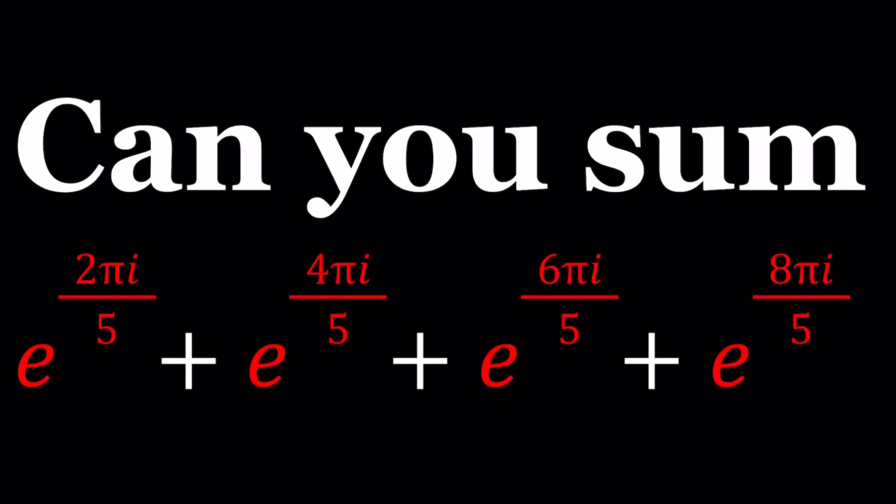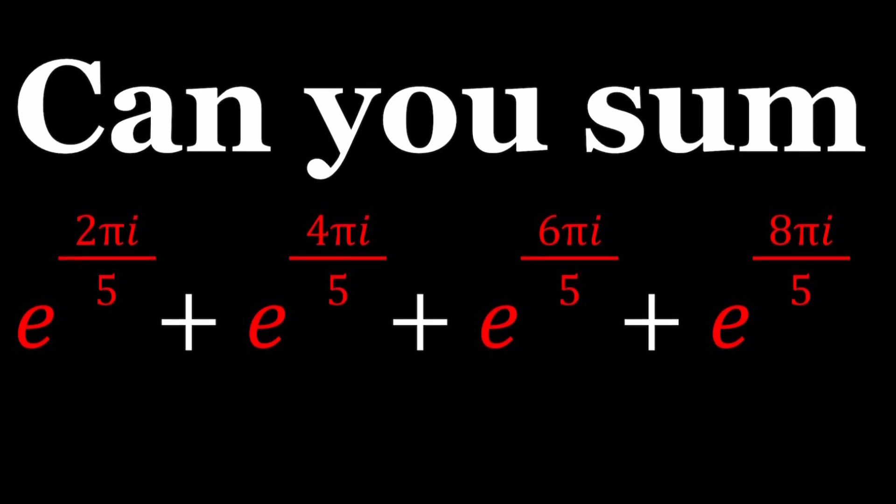Hello everyone, welcome to A plus B I. This channel is all about complex numbers, and in this video, we're going to be adding some complex numbers written in polar form. We have e^(2πi/5) + e^(4πi/5) + e^(6πi/5) + e^(8πi/5). Remember, i is the number whose square equals negative 1.